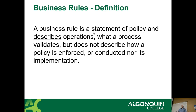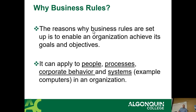A business rule is a statement of policy that describes operations — what a process validates — but does not describe how it's enforced, conducted, or implemented. Business rules are set up to allow an organization to achieve its goals and objectives. They can apply to pretty much anything that belongs to the company, such as its staff, processes, and systems.